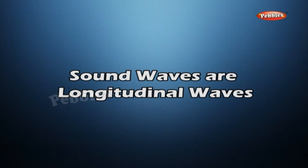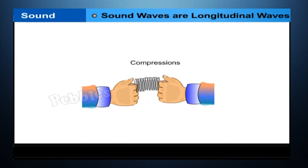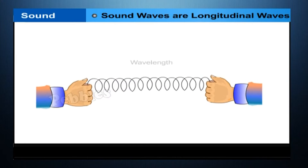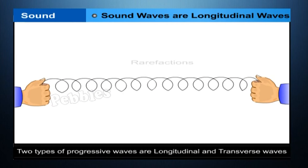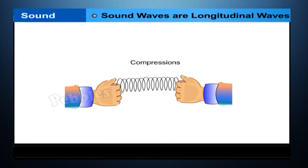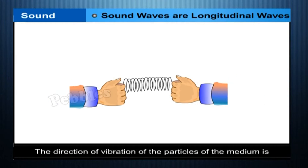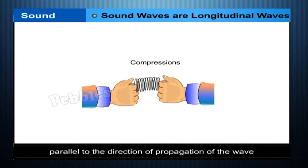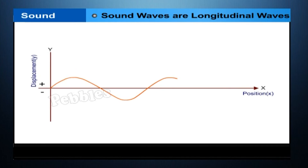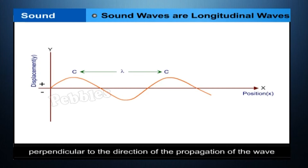Sound waves are longitudinal waves. Progressive waves proceed in the medium without being reflected back at any point in their path. The two types of progressive waves are longitudinal and transverse waves. In the case of a longitudinal wave, the direction of vibration of the particles of the medium is parallel to the direction of propagation of the wave. Whereas, in the case of a transverse wave, the direction of vibration of the particles of the medium is perpendicular to the direction of propagation of the wave.